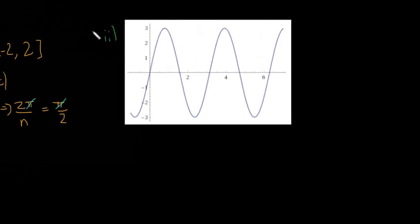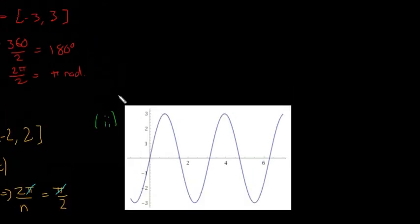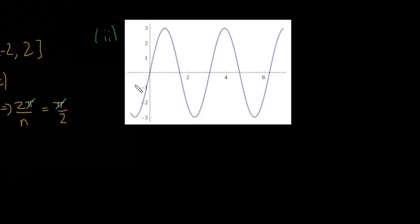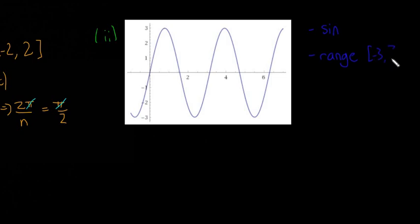For part 2, you should try to pause the video and see if you can figure it out first. The first question: is it sine or cos? This one is sine because it goes through the origin. The range goes from minus 3 to plus 3, so the range is minus 3 to 3, meaning it's going to be 3sin(n·x).